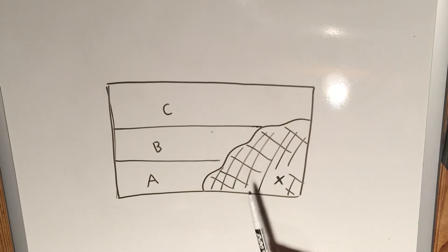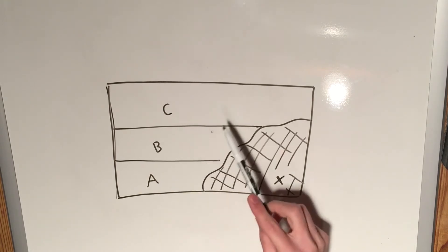If you were to deal with the most simple strategy, you would say that by the law of superposition, A was deposited, then B was deposited, then C was deposited.